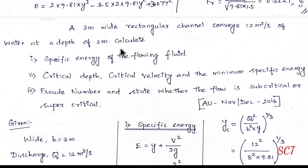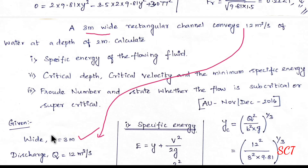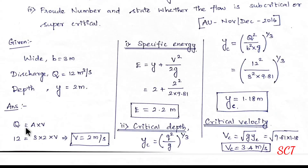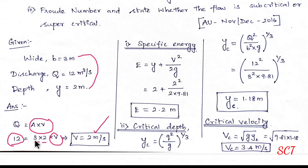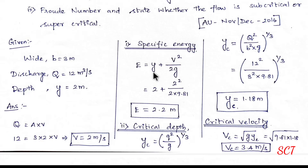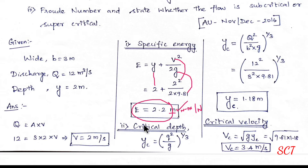Given: width B equals 3 m, discharge Q equals 12 m³ per second. First, discharge equals area into velocity. Area equals B × Y, so 3 × 2 = 6 m². Velocity V equals Q divided by A equals 12 divided by 6 equals 2 m per second. Specific energy E equals y plus V² divided by 2g.